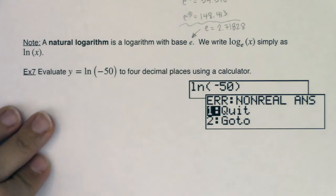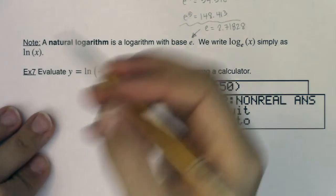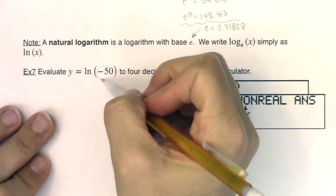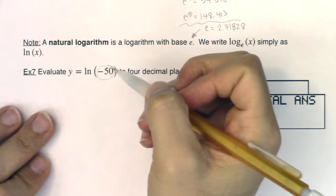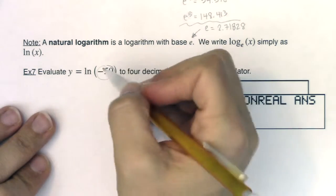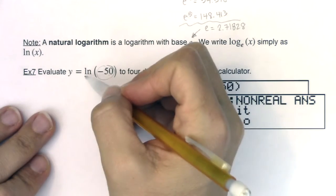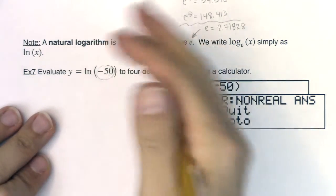And the reason is because we're running into a domain issue. I want you to take note that your argument is negative. You cannot have a negative argument when you're trying to take a natural logarithm or any kind of logarithm.